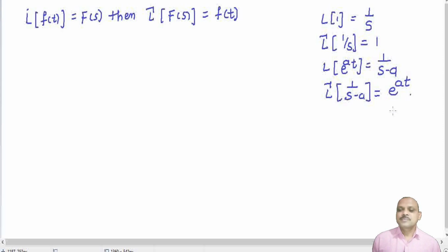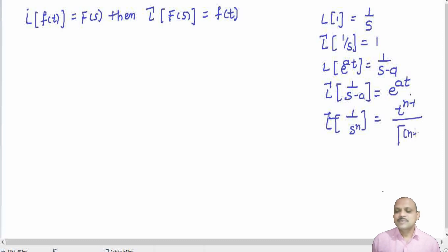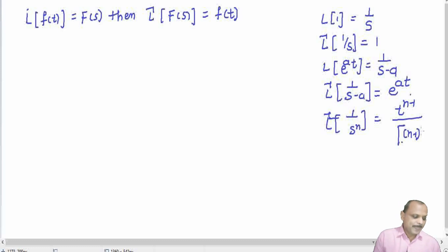So we can see that L⁻¹{1/s} = 1, and L⁻¹{1/(s−a)} = e^(at). Similarly, L⁻¹{1/sⁿ} = t^(n−1) / Γ(n−1). This uses gamma notation.